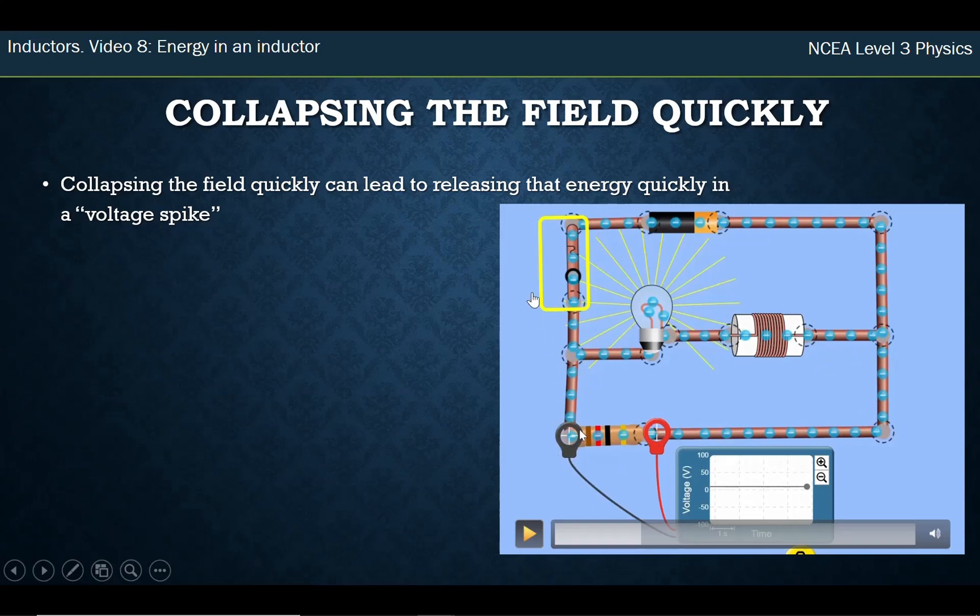What's going to happen is that current is going to go to zero, and there's going to be a back EMF, and that current produced by the back EMF from the inductor is going to flow through the resistor. So we can measure that down here.